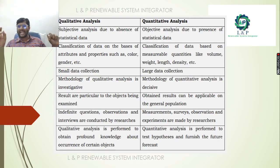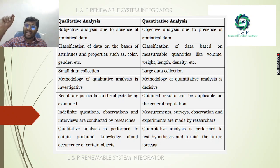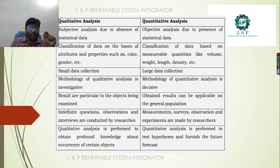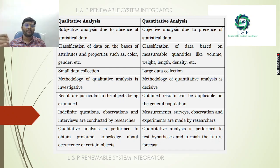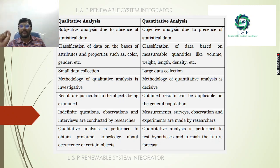The most important methodology used in qualitative analysis is the investigation methodology, whereas in quantitative analysis it is decisive. Results in qualitative are particular to the objects being examined, while quantitative results can be applicable to the general population. In qualitative analysis, researchers conduct indefinite questions, observations, and interviews. In quantitative analysis, researchers make measurements, surveys, observations, and experiments.